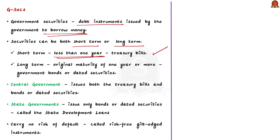Government bonds or dated securities with maturity of one year or more come under the long-term category. So if the maturity is less than one year it is a short-term government security; if it is one year or more, it falls under long-term government securities. In India, the central government issues both treasury bills and bonds or dated securities, while state governments issue only bonds or dated securities.